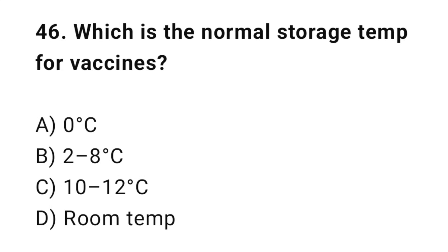Question number forty-six: what is the normal storage temperature for vaccines? The right answer is B — 2 to 8 degrees Celsius. Vaccines are stored between 2 and 8 degrees Celsius.